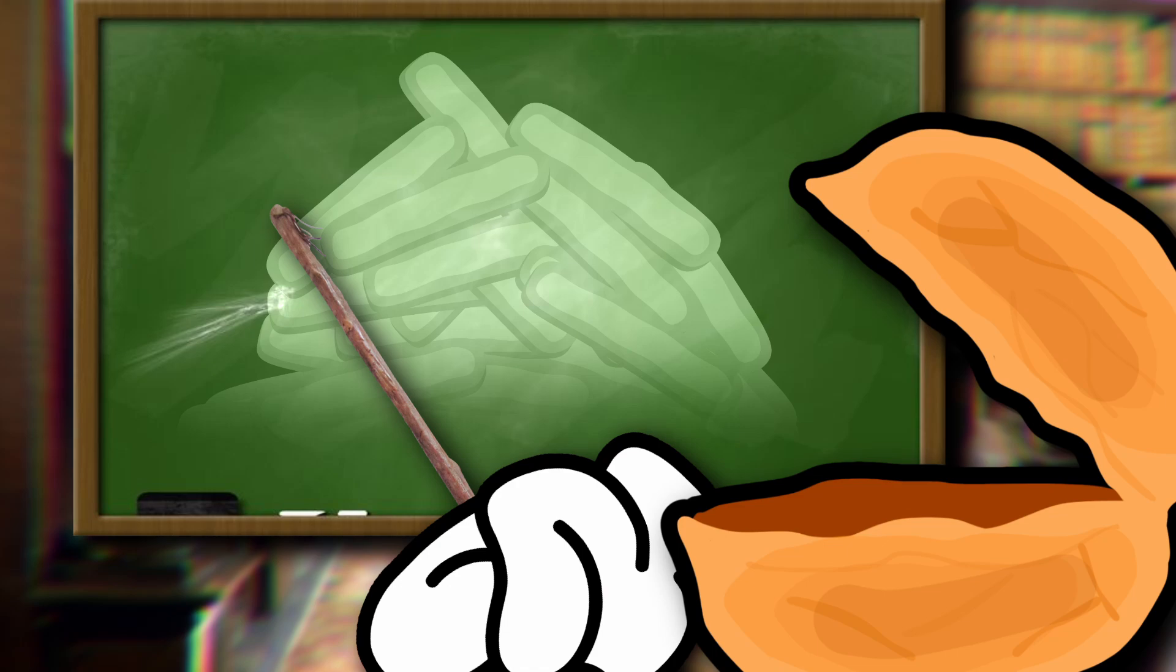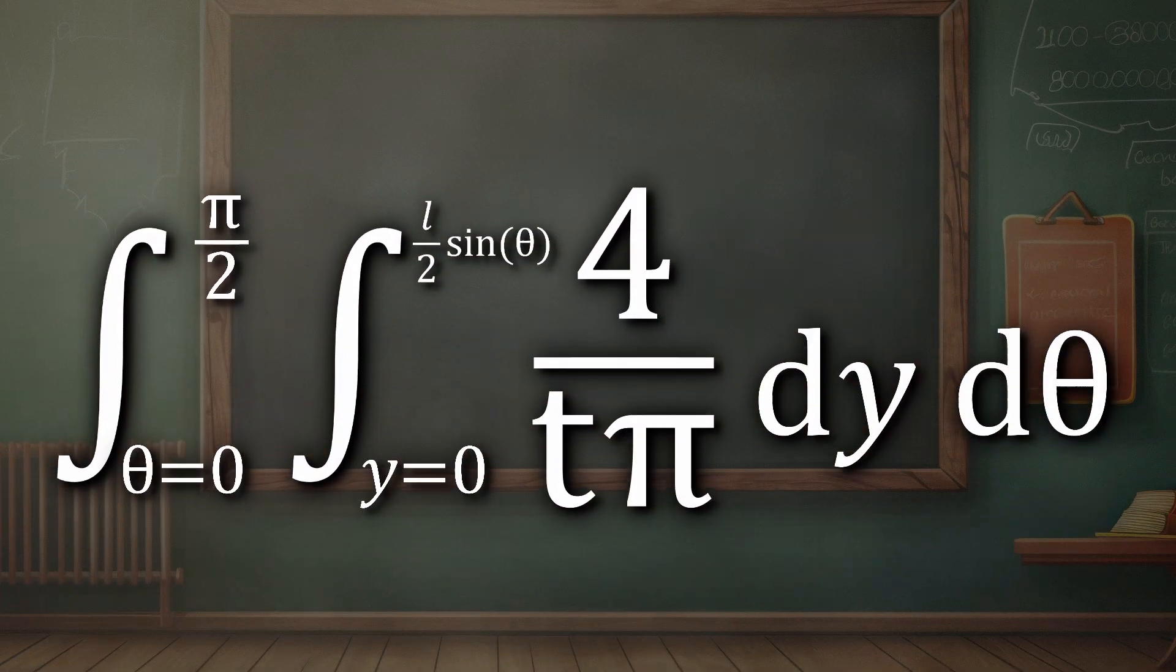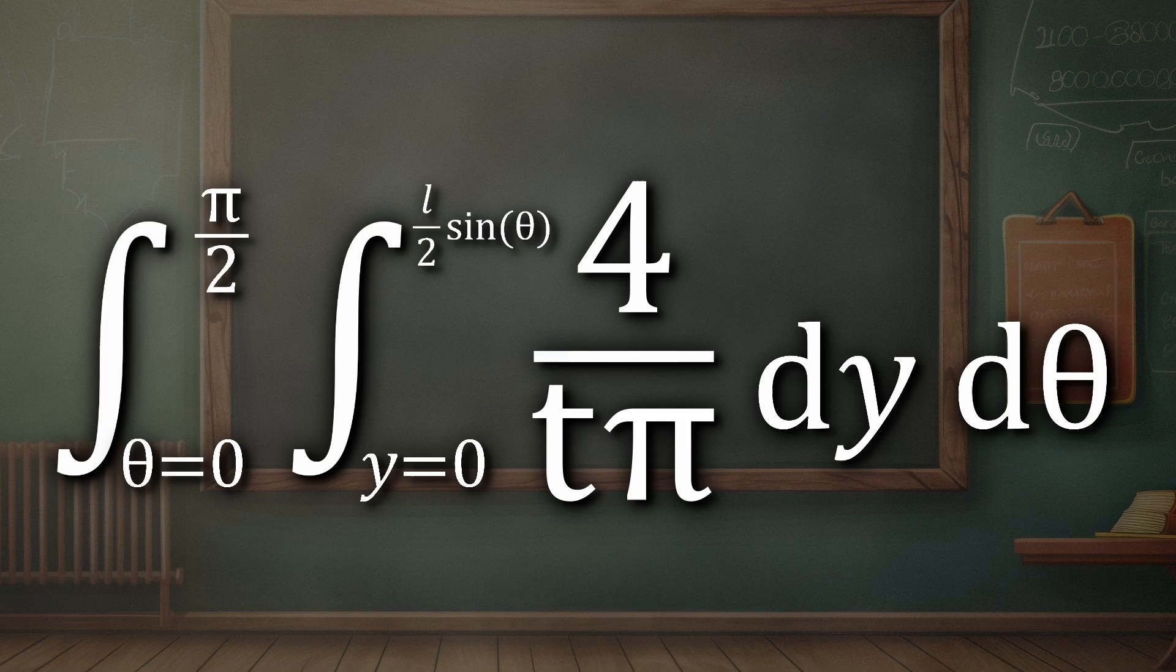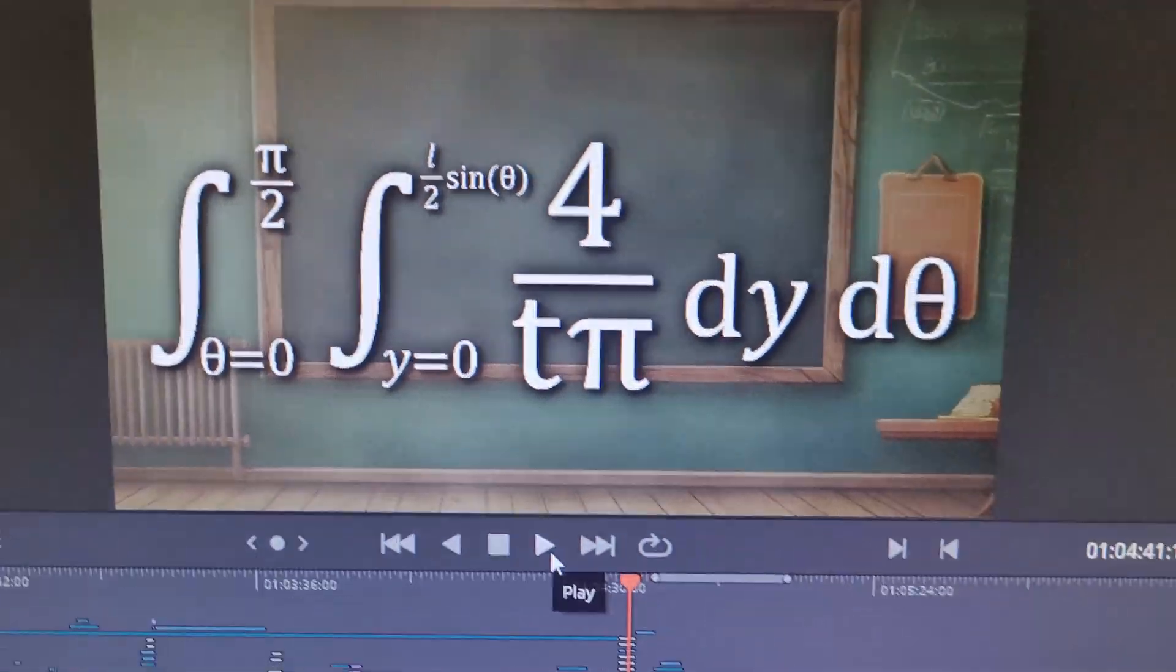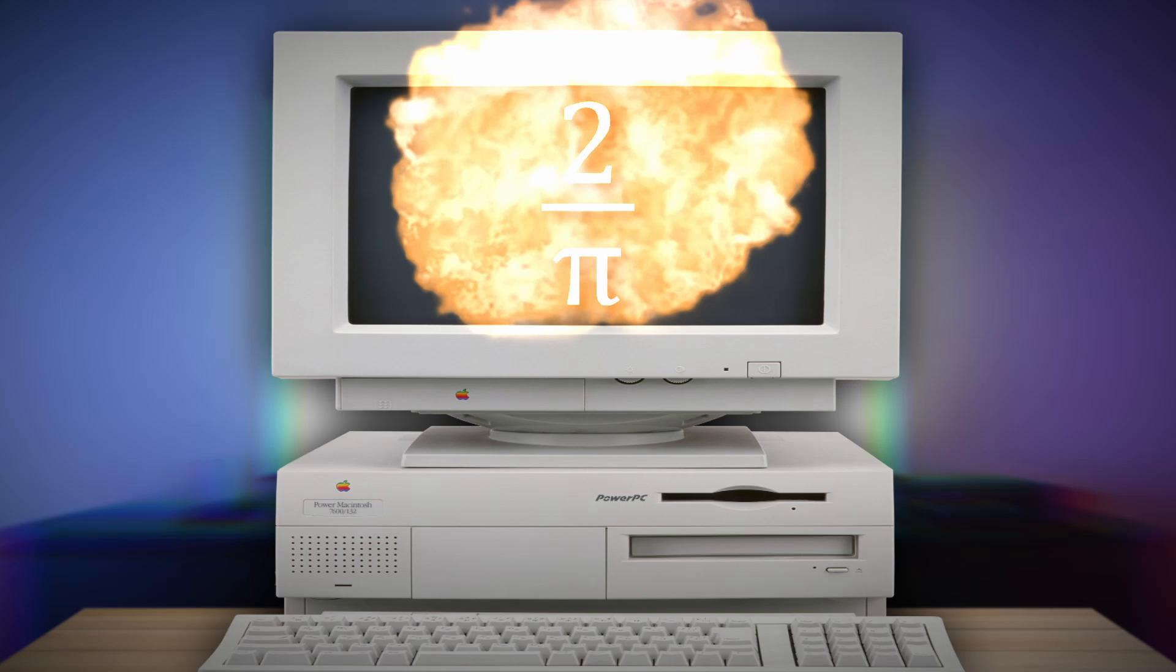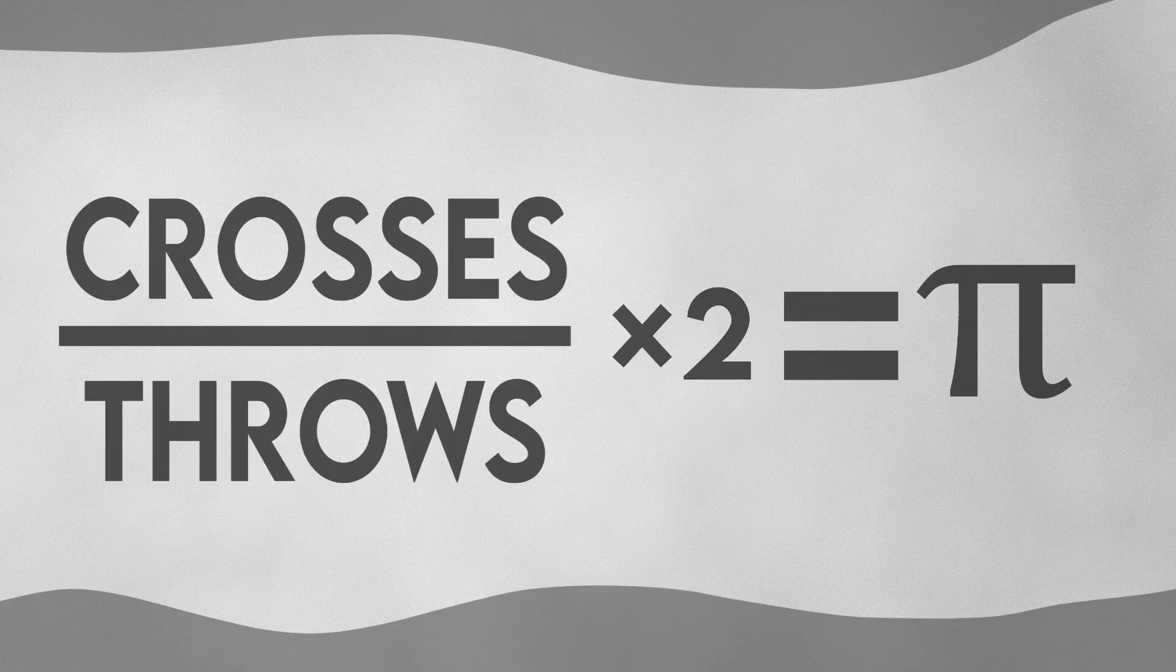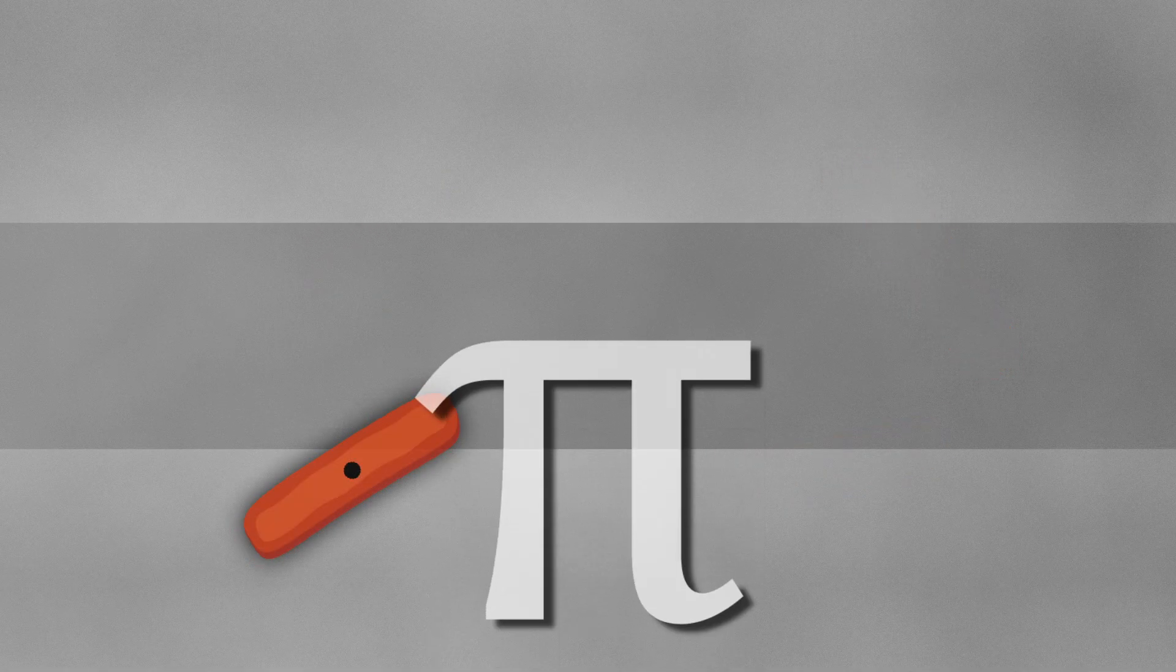To create a continuous sum of every possibility and account for its probability, we need to create a double integral with the joint probability density function. This evaluates to 2 over pi. All that is left is a simple algebraic rearrangement that reveals an expected value for the repeated tossing of sausages.